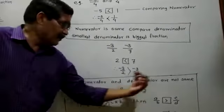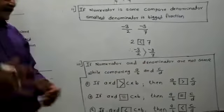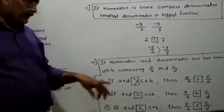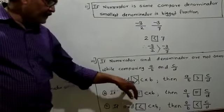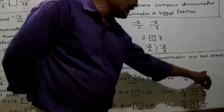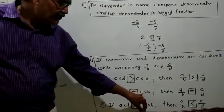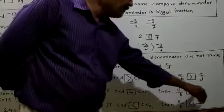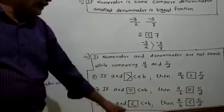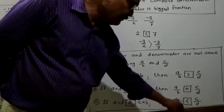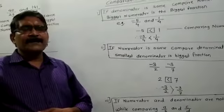If the numerator and denominator are not the same, while comparing A/B and C/D — as I already explained in the last lecture — you have to find the products A×D and C×B. If A×D is greater than C×B, then A/B is greater than C/D. If A×D is less than C×B, then A/B is less than C/D.